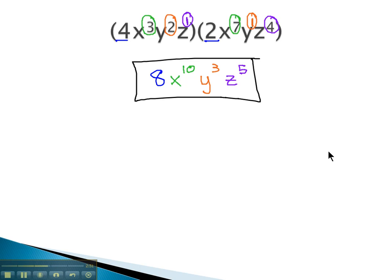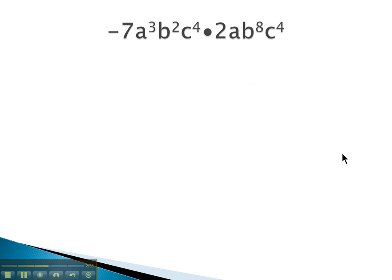Let's try one more example. Here we're multiplying negative 7a cubed b squared c to the 4th times 2ab to the 8th c to the 4th. Starting with the numbers, it's just regular multiplication there. Negative 7 times 2 is negative 14.